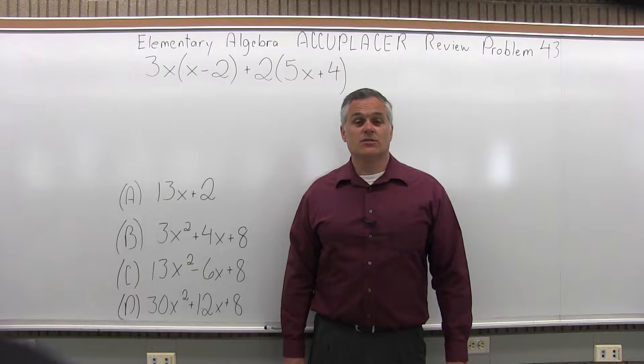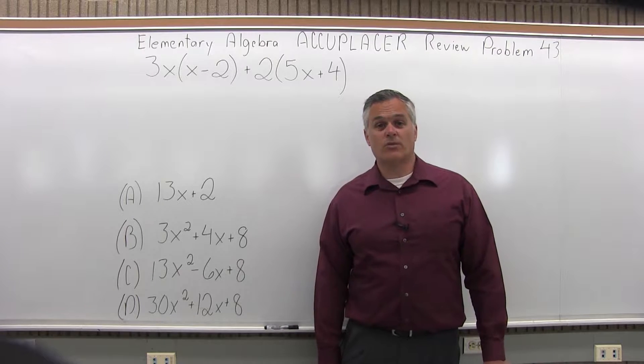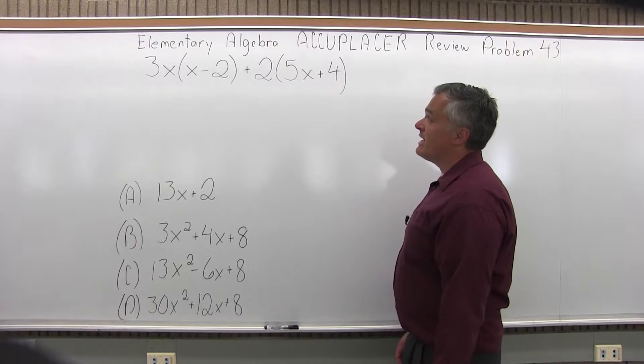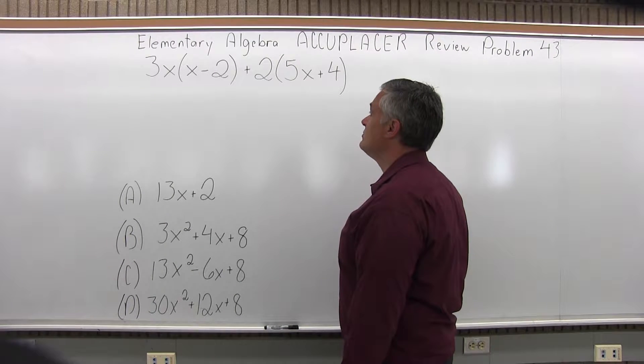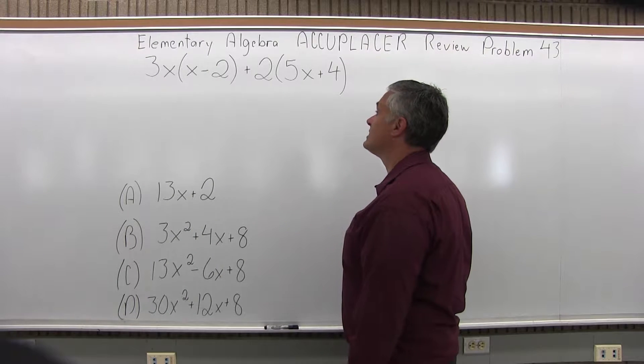This is the Elementary Algebra Accuplacer Review, Problem 43. It says 3x times in parentheses x minus 2 plus 2 times in parentheses 5x plus 4.